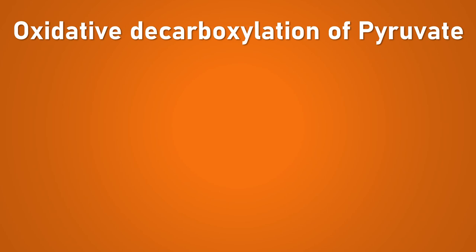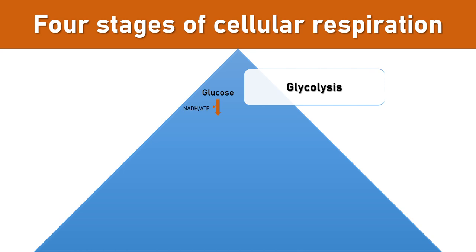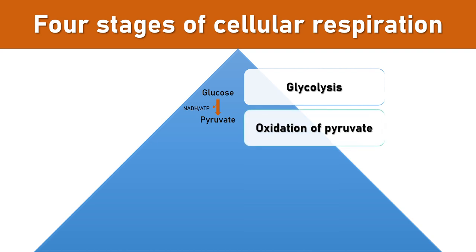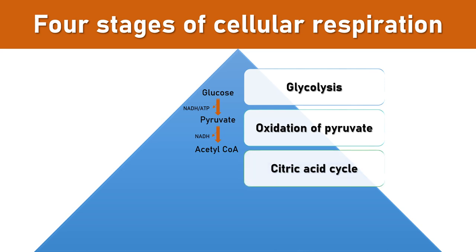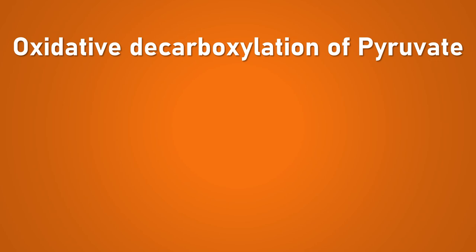This stage is known as oxidative decarboxylation of pyruvate. Cellular respiration includes four basic stages: glycolysis, which converts glucose to pyruvate and occurs in the cytosol; the bridge reaction, which is oxidative decarboxylation of pyruvate; and the Krebs cycle and electron transport chain, both oxygen-dependent pathways that occur in sequence in the mitochondria.